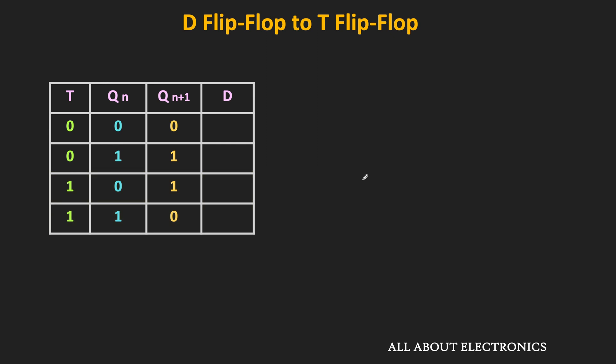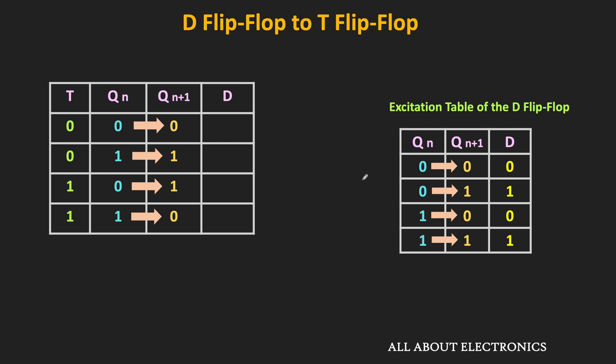Now, to get all these output transitions, let us find the required value of the D input. Once again, we will take the help of the excitation table of the D flip-flop. From the excitation table, the required value of the D input is same as the output. Whenever Qn+1 is 0, the required D input is also equal to 0. And whenever Qn+1 is equal to 1, the required D input is also equal to 1. In this way, we can complete the entire table. Now let us find the expression of D in terms of T and Qn.